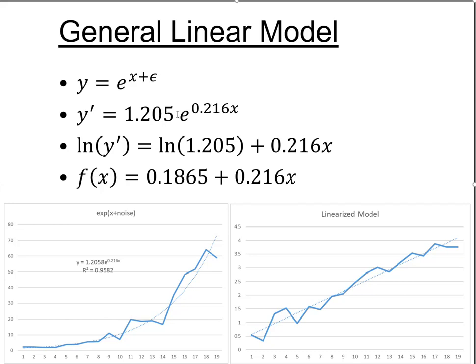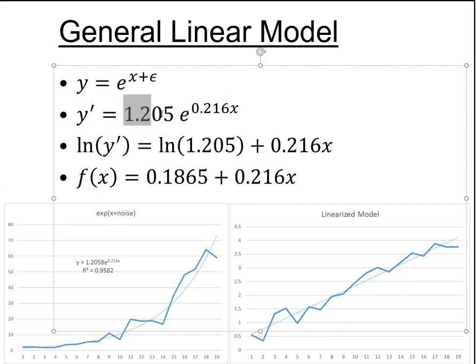We can take the natural log of both sides of this equation. When we take the natural log on this side, we get the natural log of y. On the other side, when you take the natural log of two things that are multiplied together, the result is the natural log of the first one plus the natural log of the second one. So here we have the natural log of 1.205, and then we have the part from the exponent. This becomes our beta 0, this becomes our beta 1, and suddenly we have a linear equation.